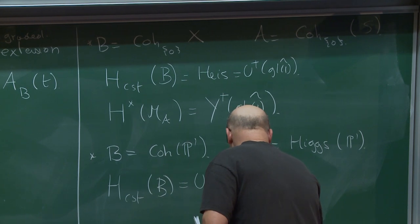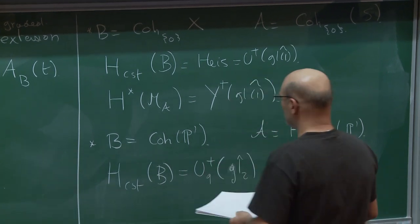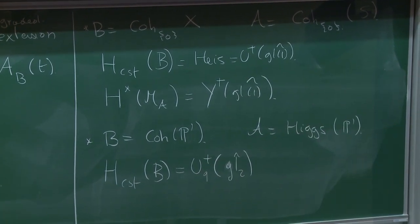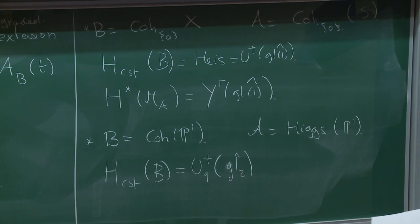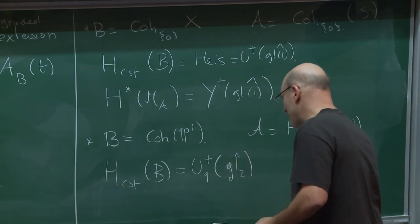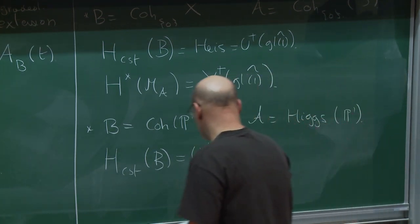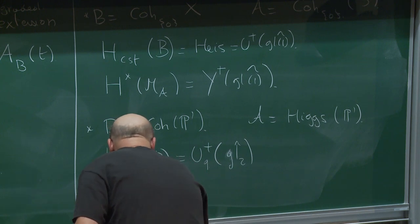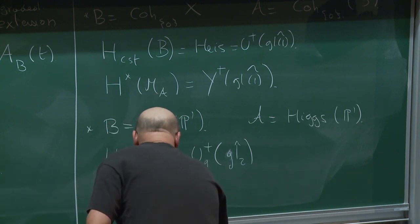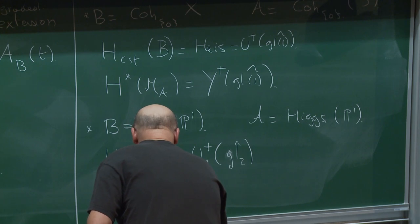Now for real examples corresponding to modifications along a curve inside the surface. Suppose B is coherent sheaves on P¹. Then A will be Higgs sheaves on P¹. The constructible Hall algebra is known by work of Kapranov to be the positive half of GL₂̂, if you add a little center. And so this gives the cohomological Hall algebra of this case.